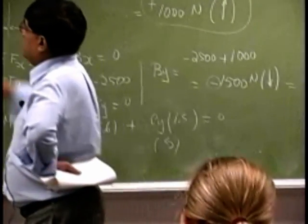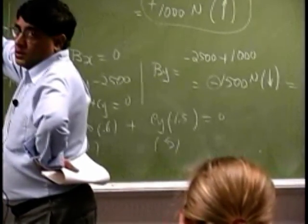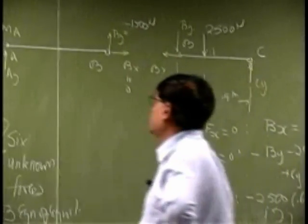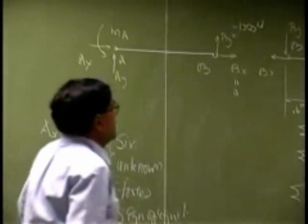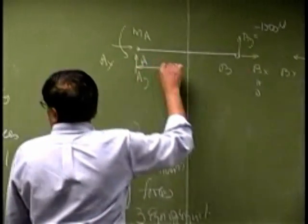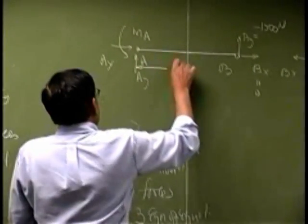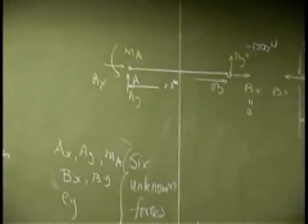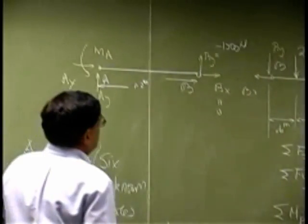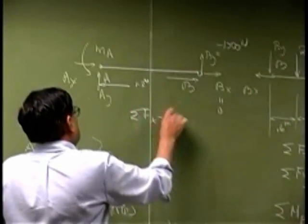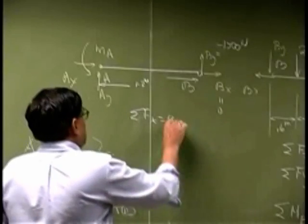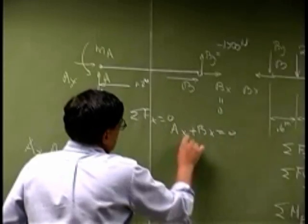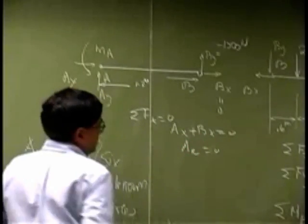So this will go up but still have the same negative magnitude. So that is for the force on part AB. Now this distance is known as 1.2 meters and we go through exact same thing. We sum the force in X, that should go to zero. That immediately gives you AX plus BX as zero or AX goes to zero.